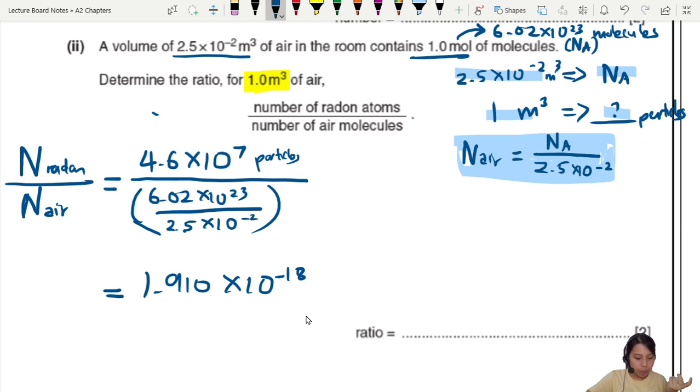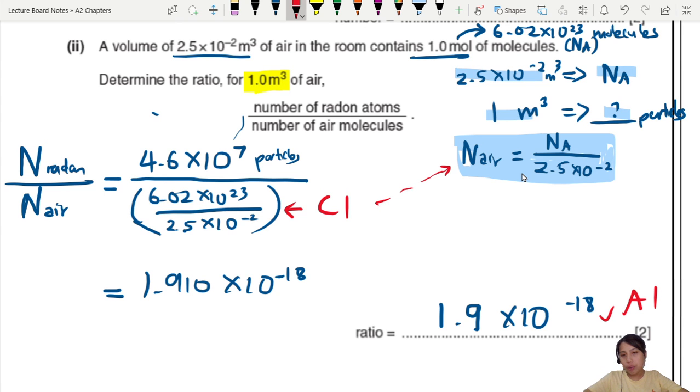So if you press calculator correctly, we'll give you 1.910 times 10 negative 18. That's a ratio. That's really, really small. So I guess it's not that dangerous. So this will be 1.9 times 10 negative 18. That's really small for a ratio. So 1 mark will be your final answer here, A1. The other one is if you talk about finding the number of air molecules. So that's for this part.